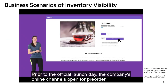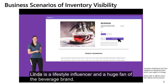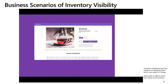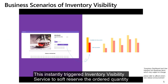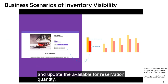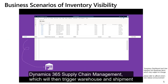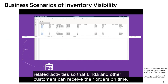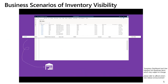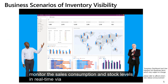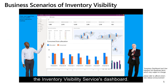Prior to the official launch day, the company's online channels open for pre-order. Linda is a lifestyle influencer and a huge fan of the beverage brand — due to her excitement she pre-ordered 100 cans online on their branded website. This instantly triggered Inventory Visibility Service to soft reserve the ordered quantity and update the available-for-reservation quantity. The successful soft reservation is then referenced on a sales order created in Dynamics 365 Supply Chain Management, which triggers warehouse and shipment-related activities so customers receive their orders on time. Meanwhile, channel sales manager Kevin and inventory manager Kai can easily monitor sales consumption and stock levels in real time via the Inventory Visibility Service dashboard.